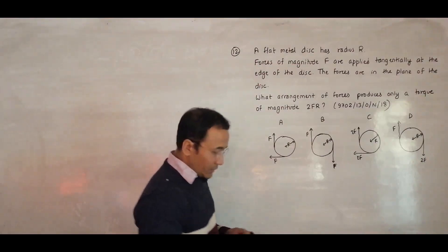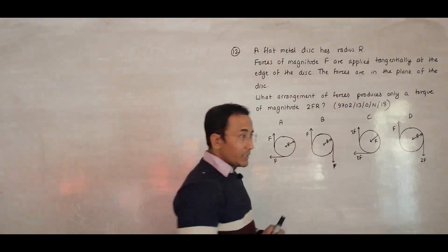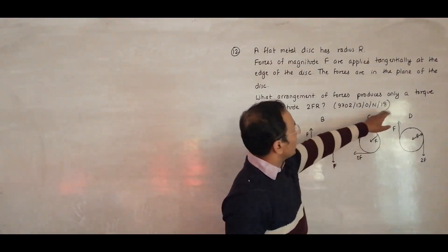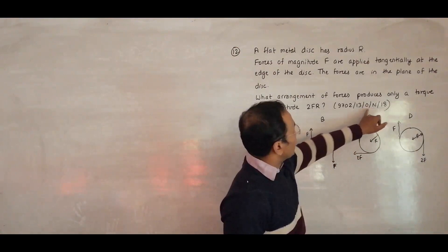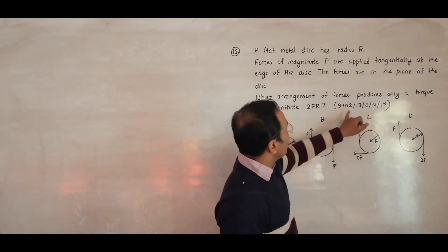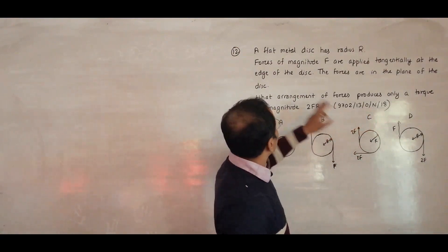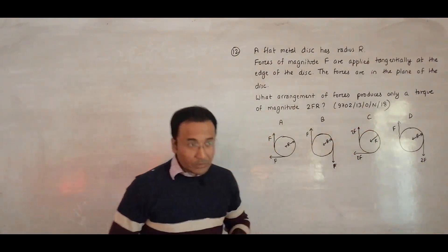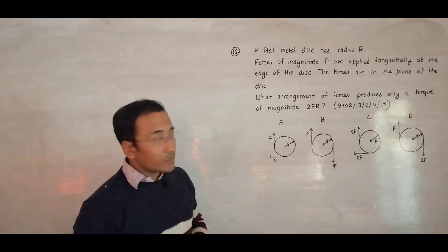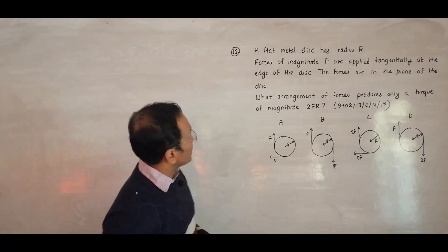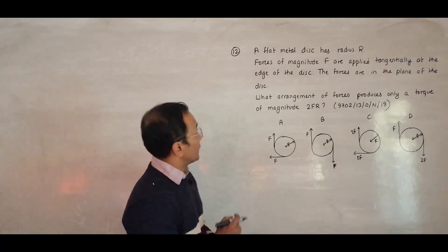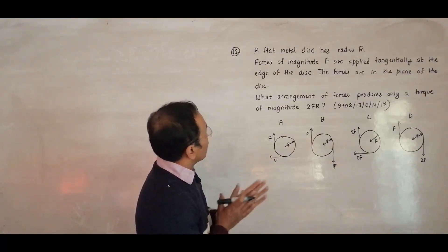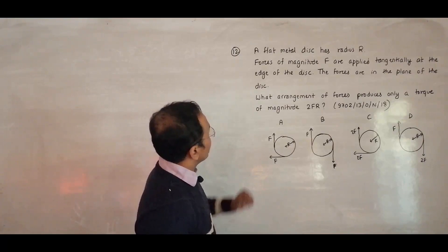Today the question is from the 2018 October/November Paper 1, question number 12. It is concerned with the chapter on forces, moment, or torque. The question shows four diagrams.